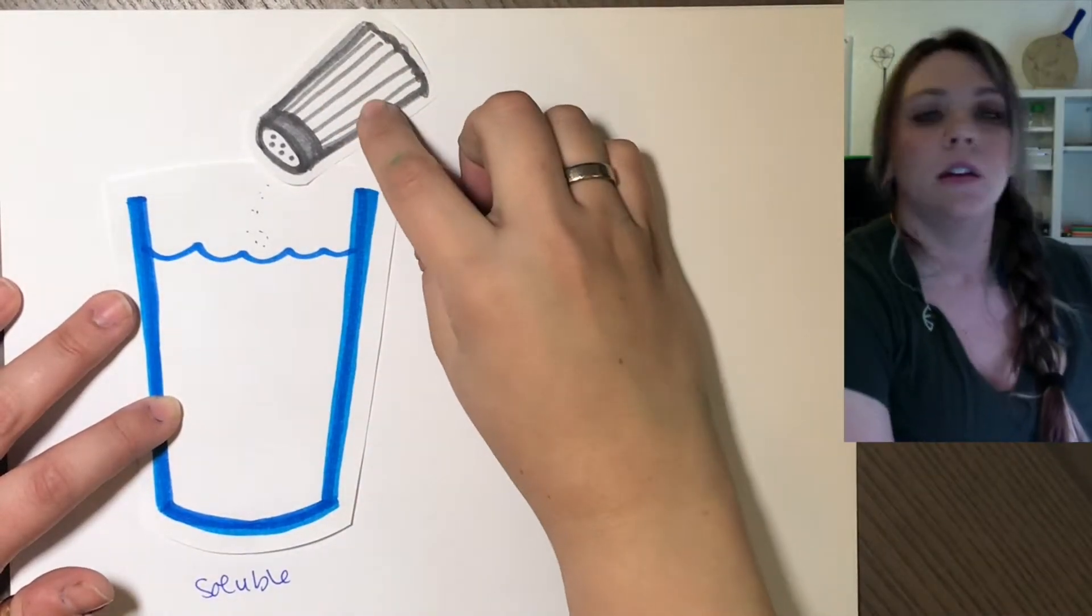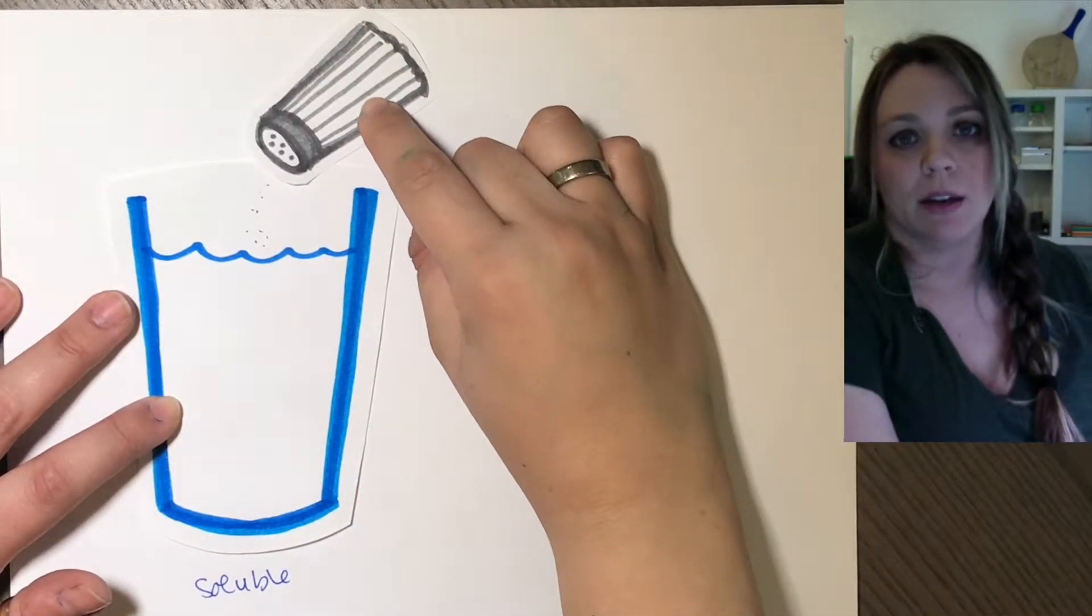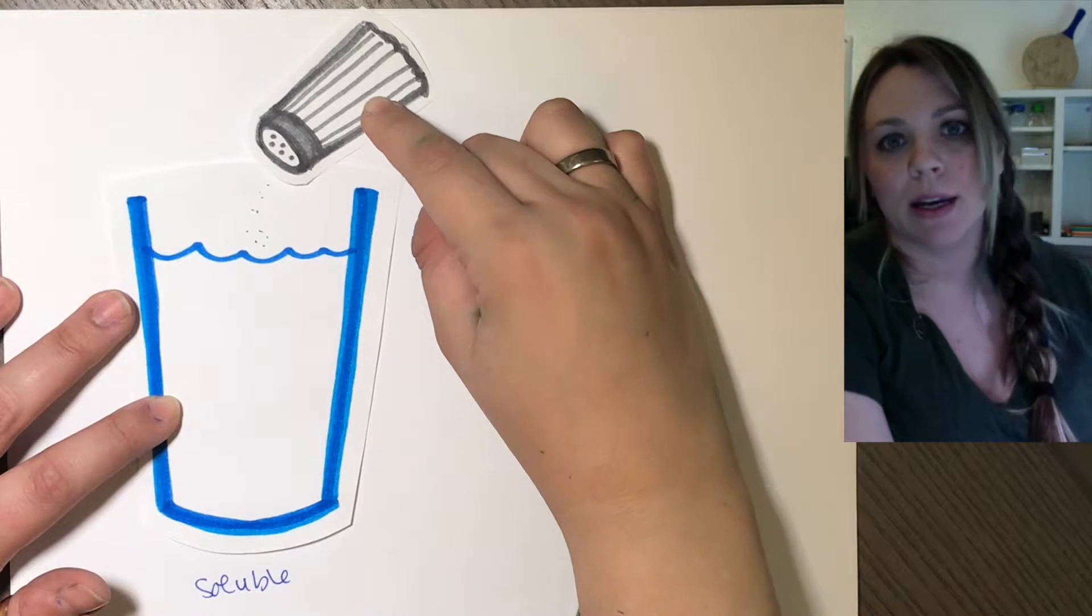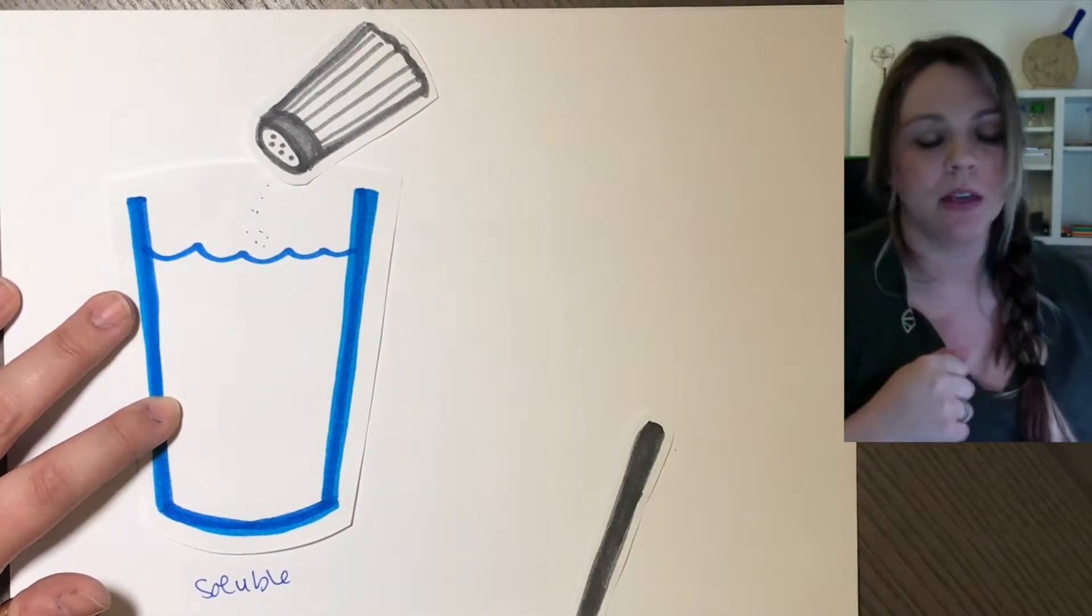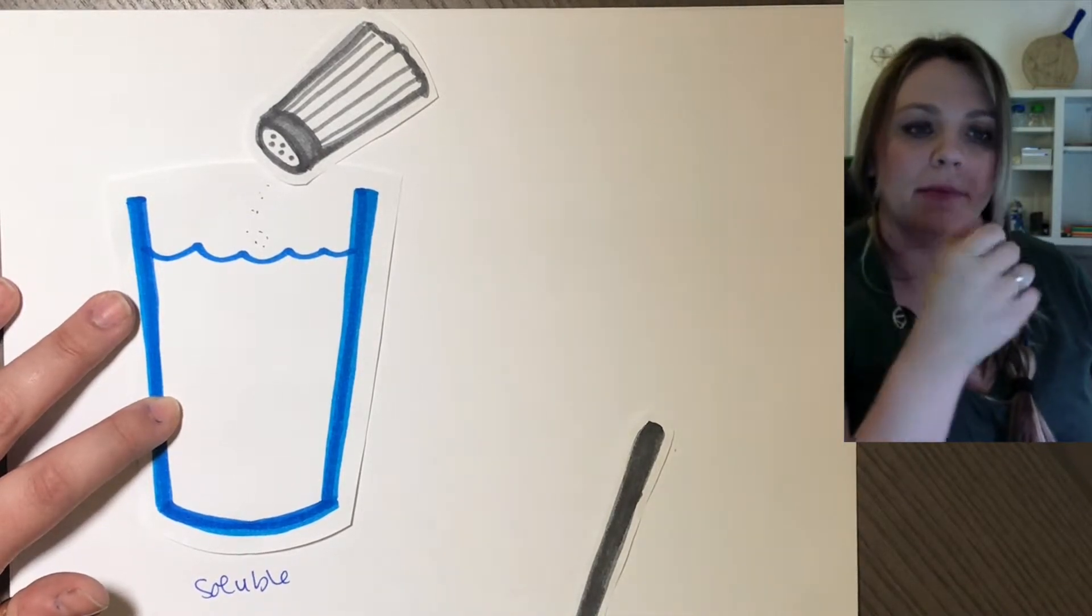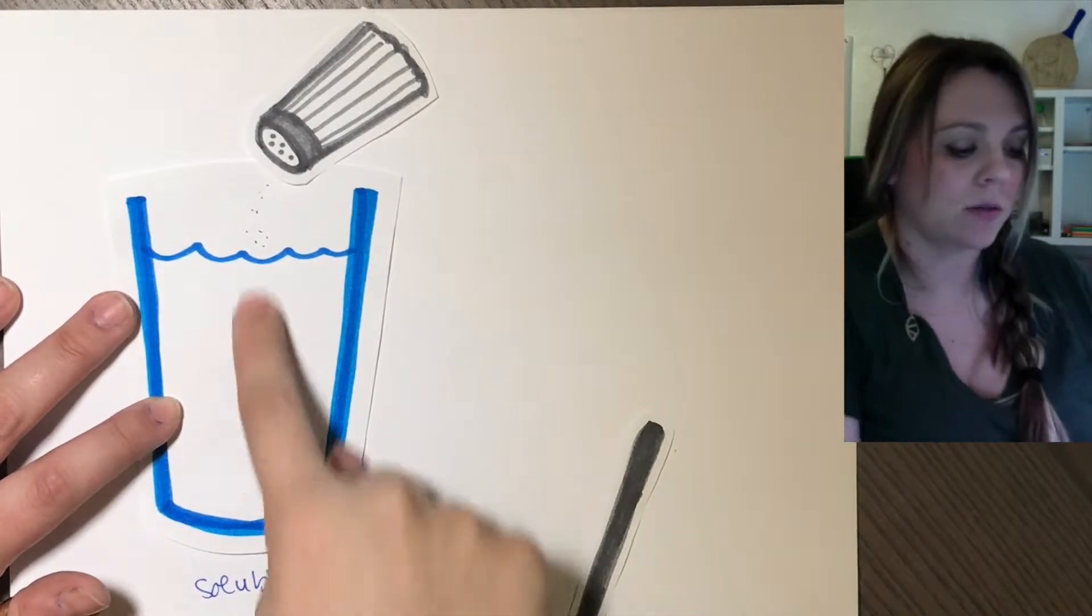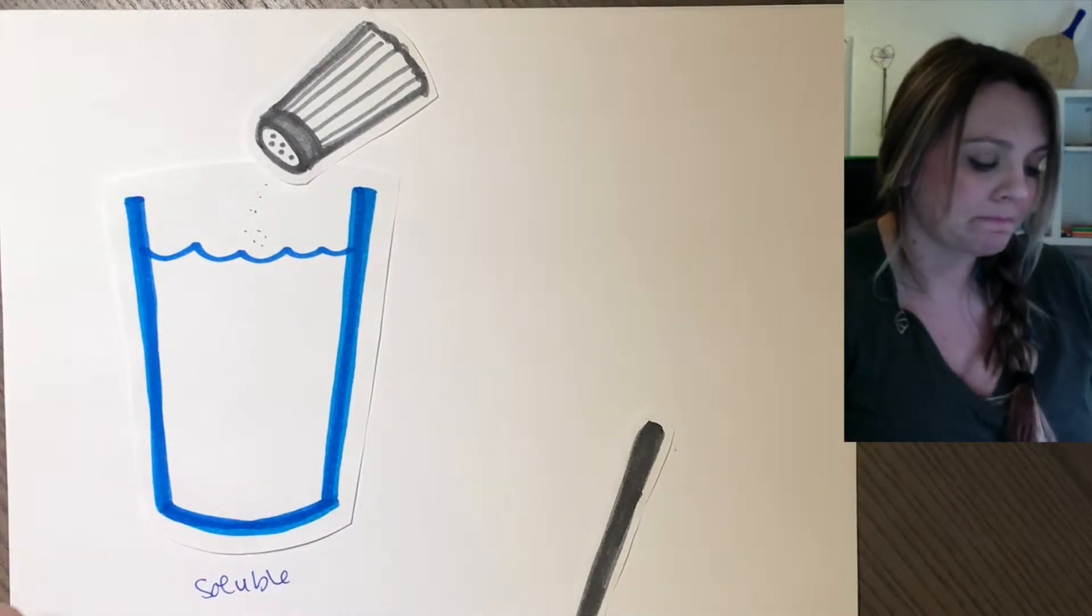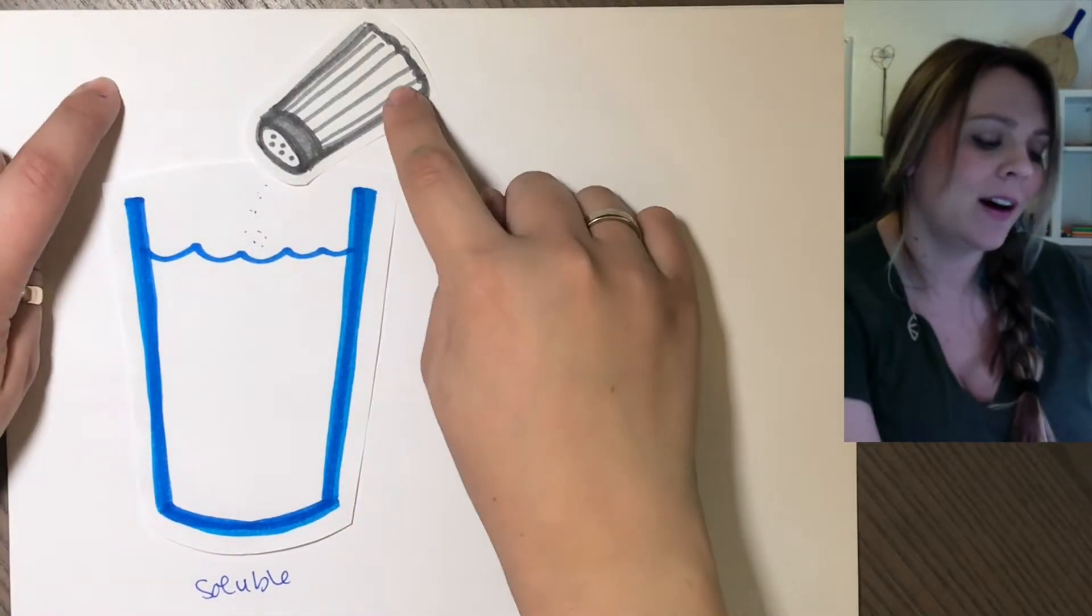So unless your soluble compound has some kind of dye in it, like Gatorade, right? You put Gatorade into water and mix it up. It starts to turn red or orange or whatever powder you get. That's just because there's a dye in there. So it will actually turn the water that color. Unless there's a dye in it.